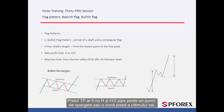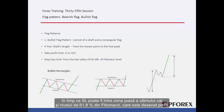TP price would be H and H2 pips above a breakout point or a valley of the last wave, while SL can be between the valley of the last wave and the 61.8% level of the Fibonacci drawn on H.